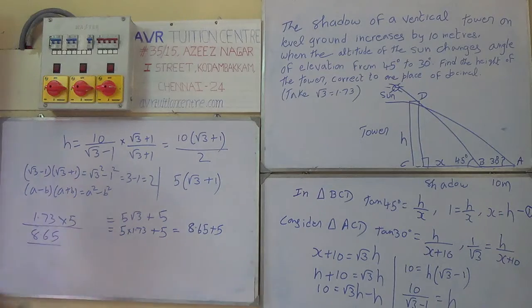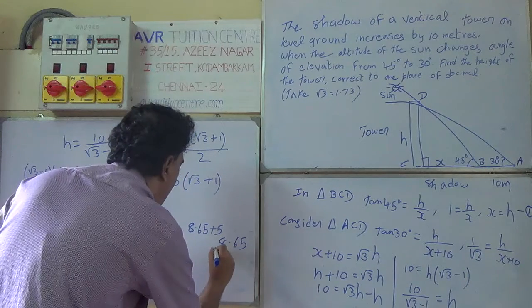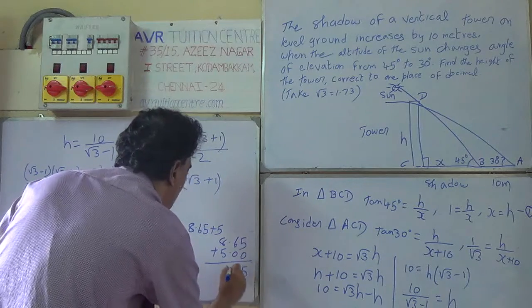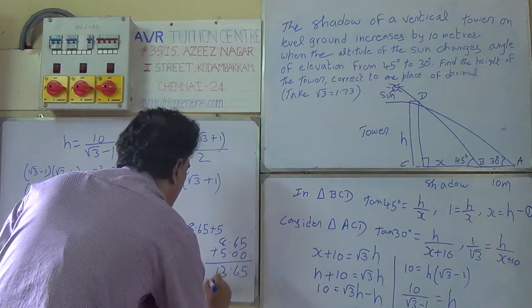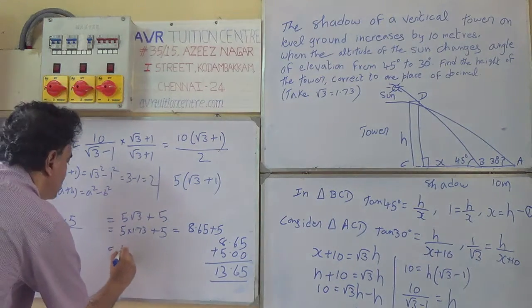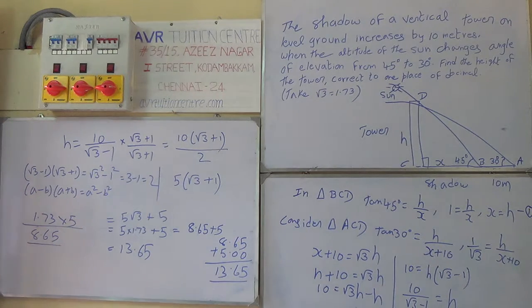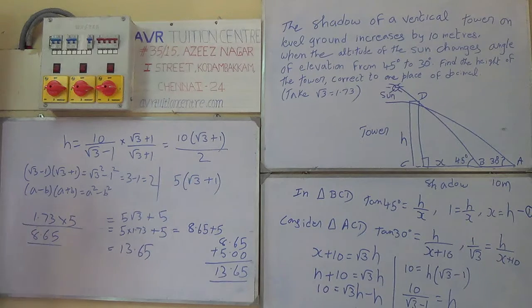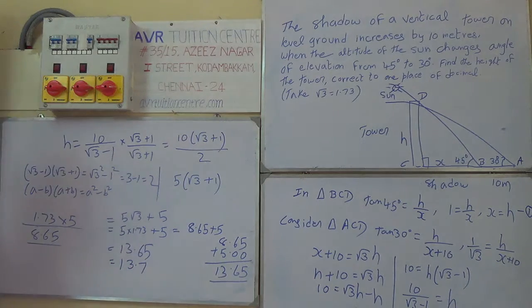We have to add 8.65 and 5.00, which gives 13.65. We have to give the answer correct to one place of decimal. The second decimal place is 5, so we add 1 to the first decimal place. Therefore the height of the tower is 13.7 meters.